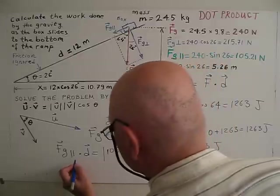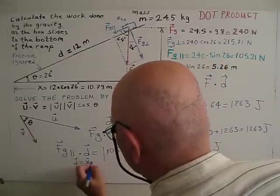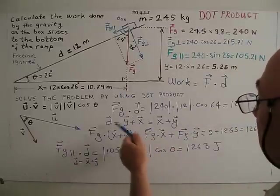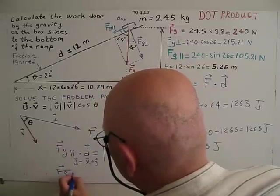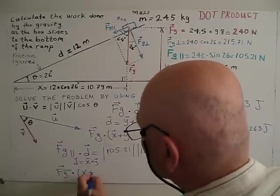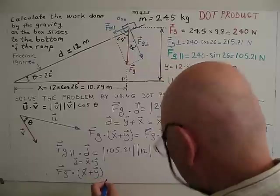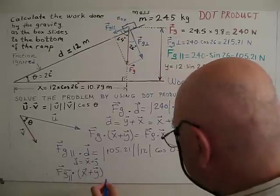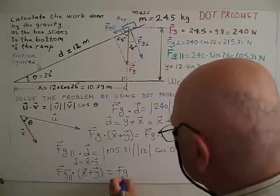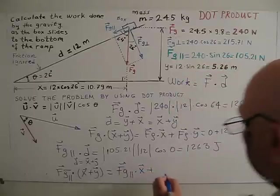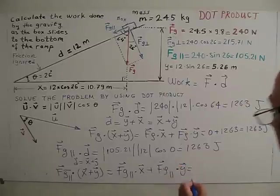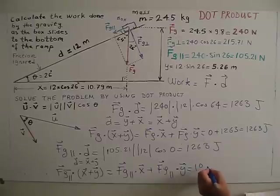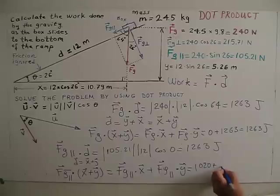Again, if I replace D, X plus Y, as I did here, D equal X plus Y. So, FG parallel dot X plus Y. FG parallel dot Y. When I do this calculation, I get 1020. Second part, I get 243, 1263 joules.